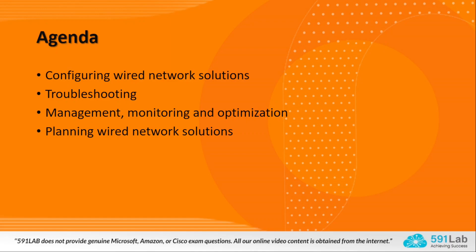Troubleshooting includes how to identify a network failure, how to determine implications on network state due to remediation actions taken, and how to determine the course of performance problems. Management, monitoring and optimization covers configuration management and how to analyze data representing the operational state of a network. Determining an appropriate implementation plan based on design and customer requirements is covered under planning.